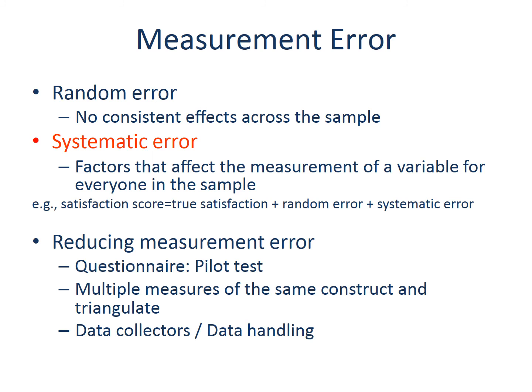Before we conclude this presentation, I want to draw your attention to the issue of measurement error. We use measurement to capture the trait we want to understand and it is not perfect. There are random error and systematic error. Random error involves factors that randomly affect people's responses, such as an individual's mood. This error is less serious and is often considered noise because it occurs only for some people in your sample and is cancelled out among the people within the sample, so it doesn't change the average value measured from the group.